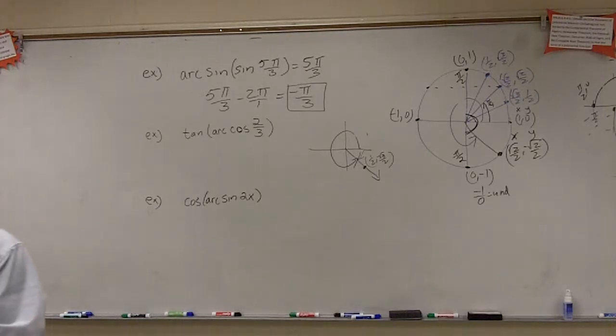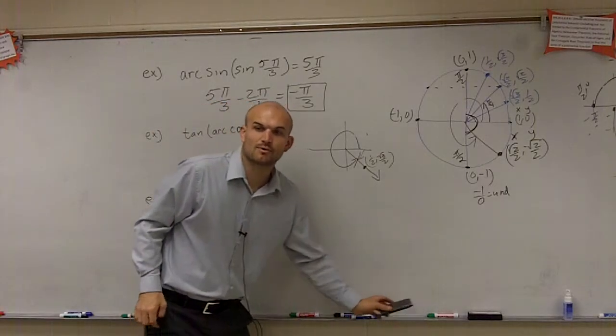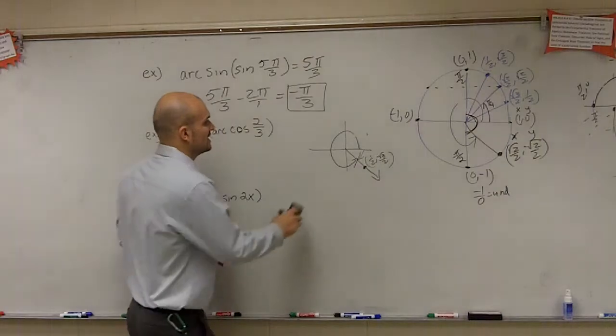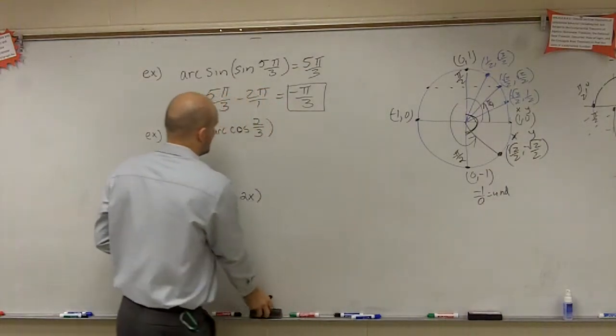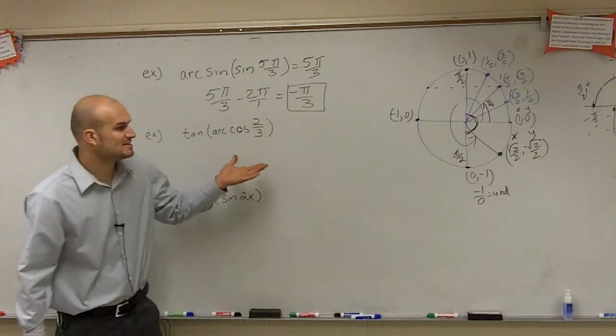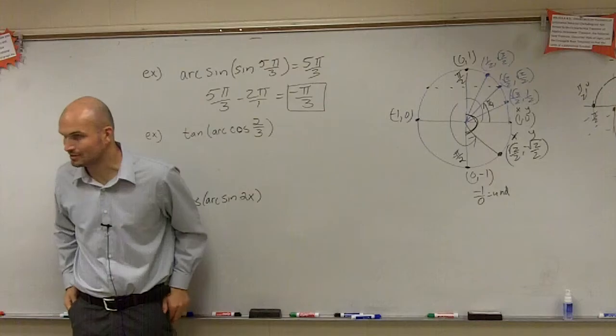Let's go over to the next point. What I'd like to go over is what happens when we have a point that's not on the unit circle?